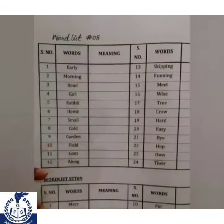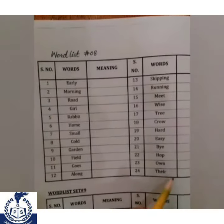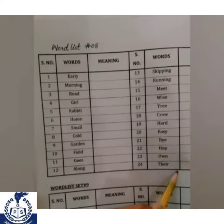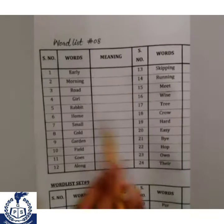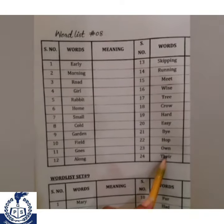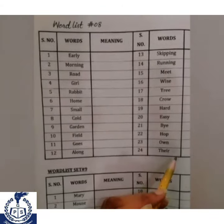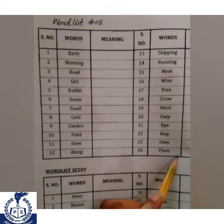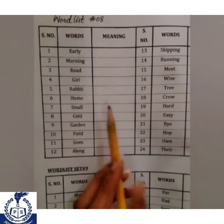Students, this is your activity file — Words List number 8. Here are 24 words given. You have to search these words in your book and then underline them. You have to learn these words with the spelling for the dictation. Coming Friday, I am going to conduct the dictation of these words. This is your task: learn these words for the dictation.